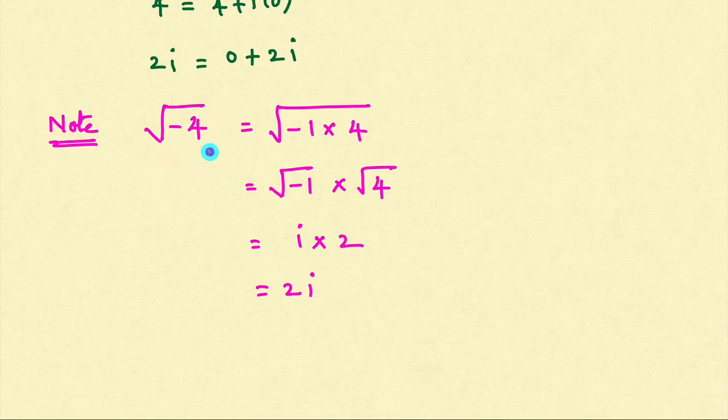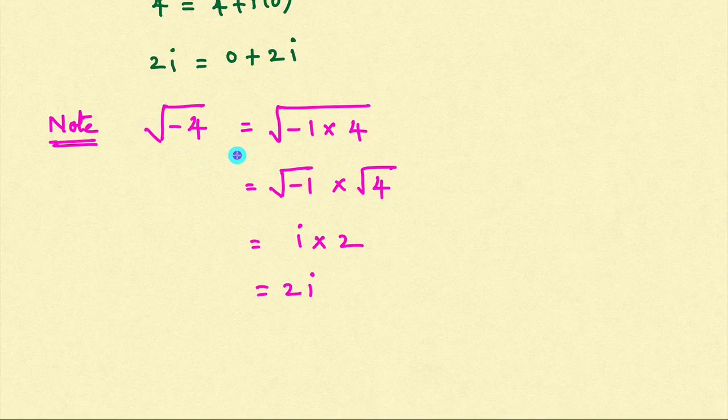So what we learned here — natural numbers, whole numbers, integers, rationals, irrationals, real numbers, and complex numbers. Natural number set is a subset of whole numbers, whole numbers is a subset of integers, integers is a subset of rational numbers, all these are subsets of real numbers, and real numbers are a subset of complex numbers. In the next class, we are going to learn about the definition of logarithm and a few examples. Thanks for watching this video. Have a great day. Bye-bye.